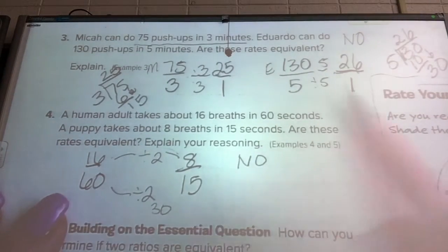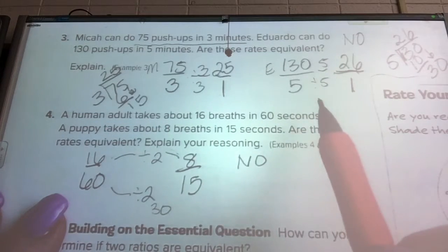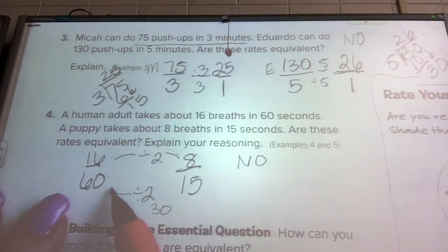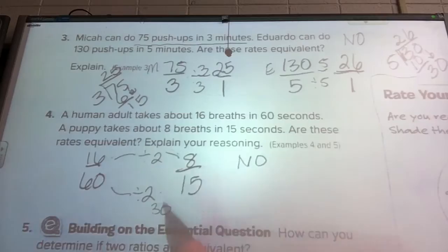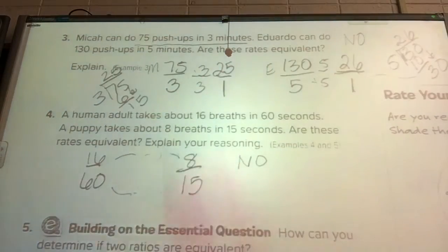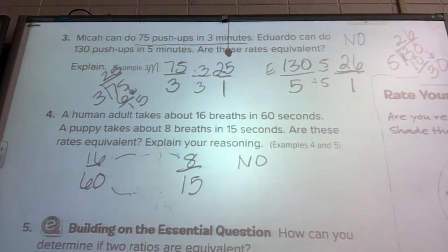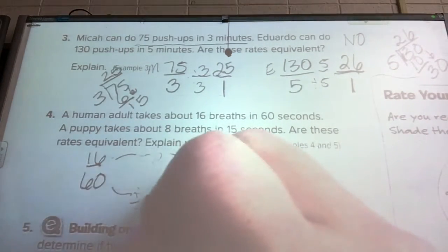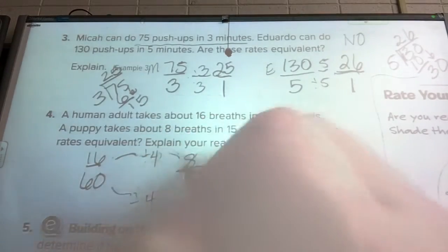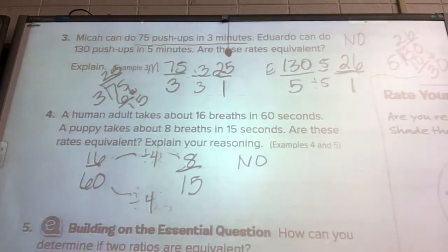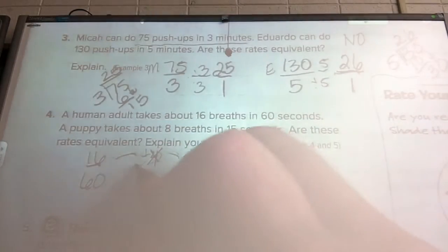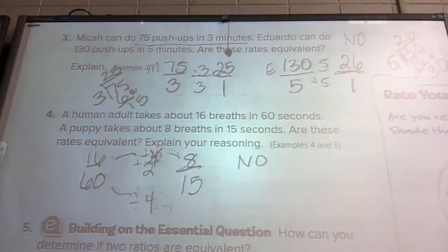That's another way that you can do it. You can either come down to a unit rate like we did in the above problems, or if you have two numbers that are really compatible, you can figure out how to get from one number to another. It doesn't matter if you start on the top or bottom, as long as you do the same on both. I could say, how would I get from 60 to 15? I would divide by 4. If I divide 16 by 4, do I get 8? No, I would get 4. So because this doesn't work, your answer has to be no.